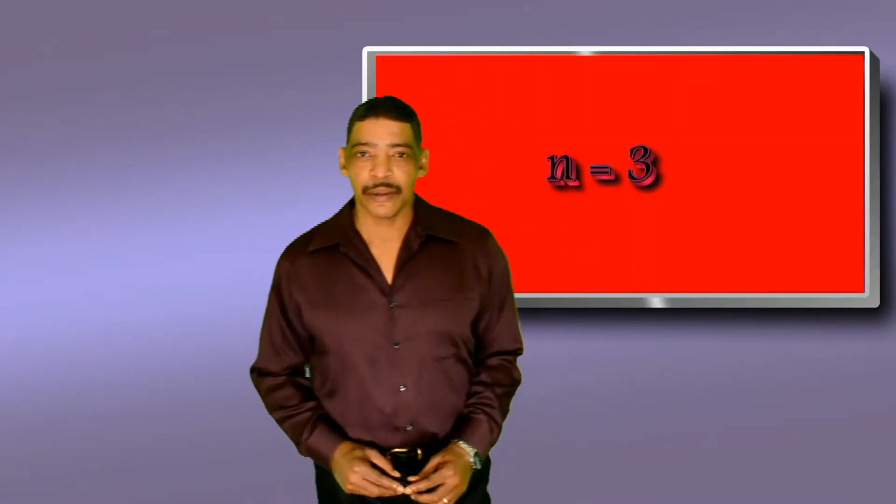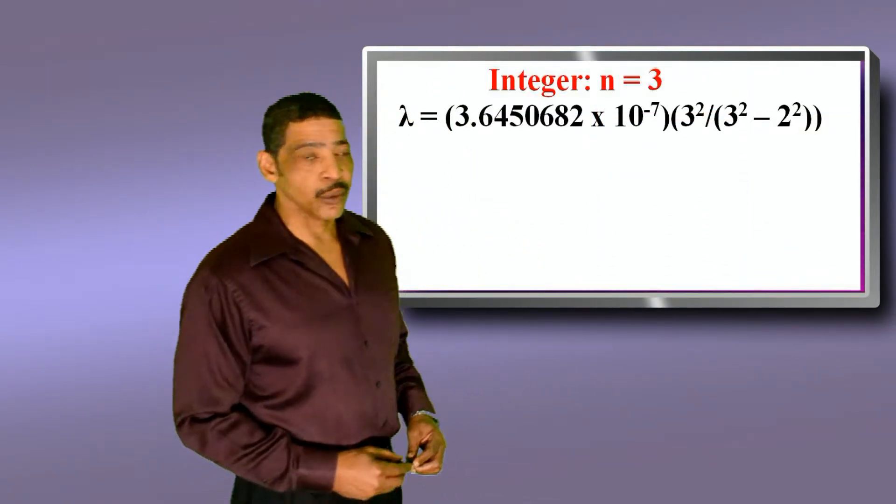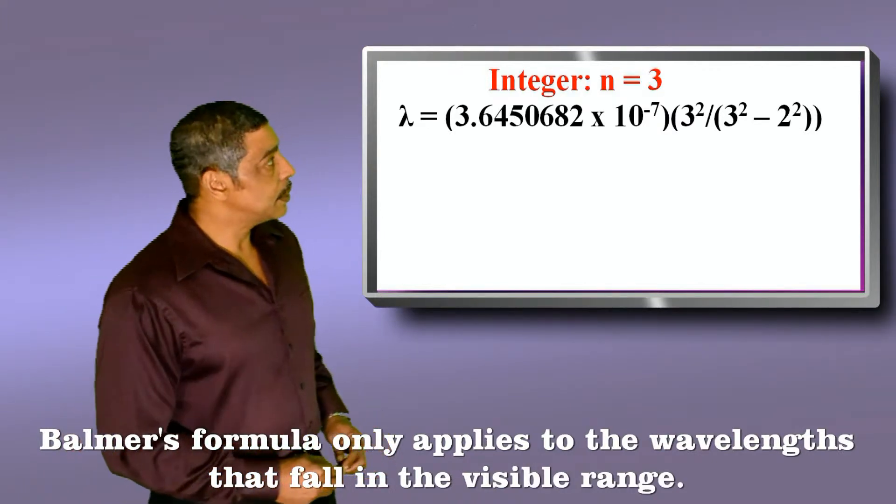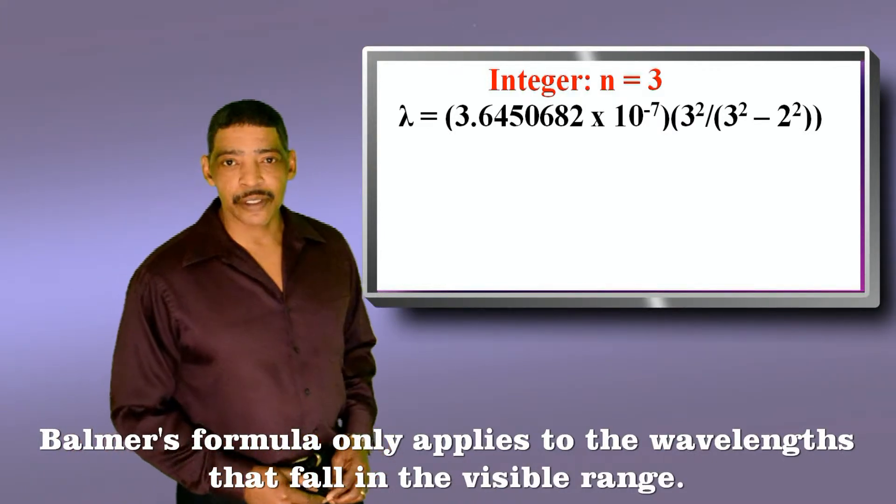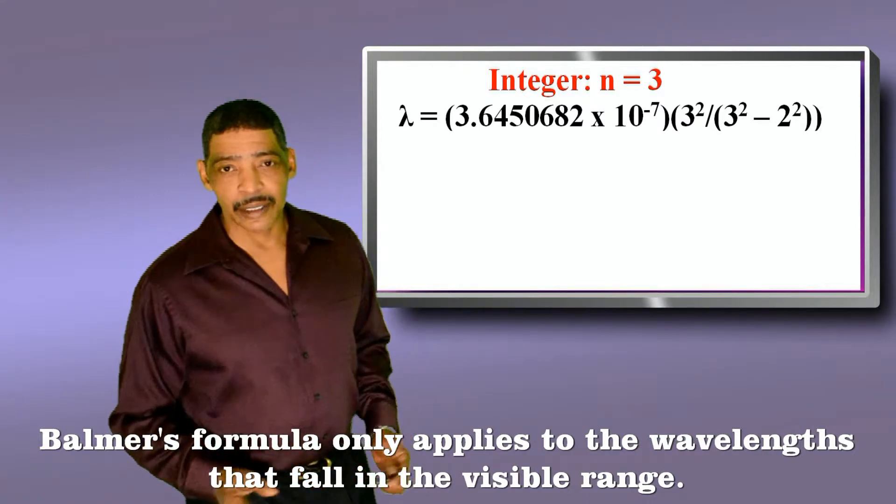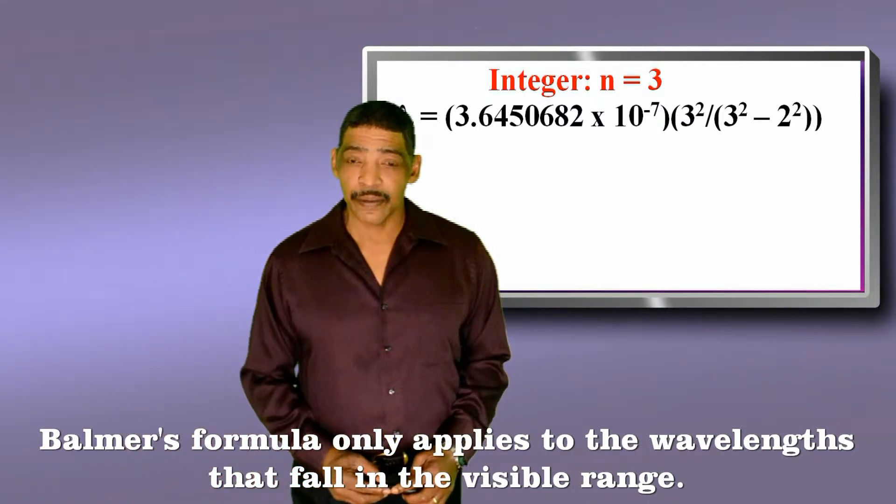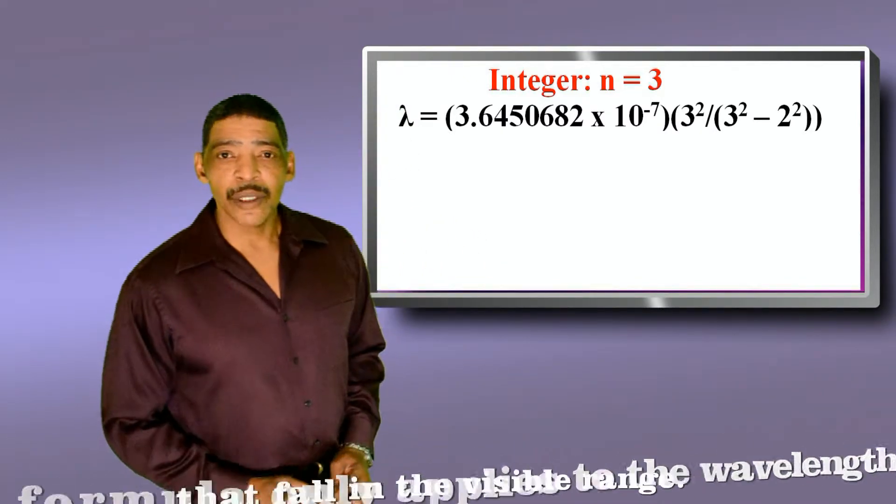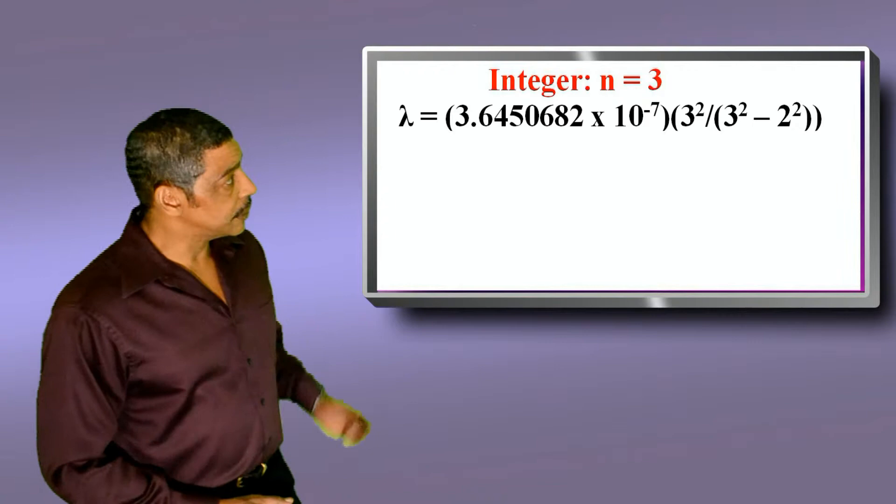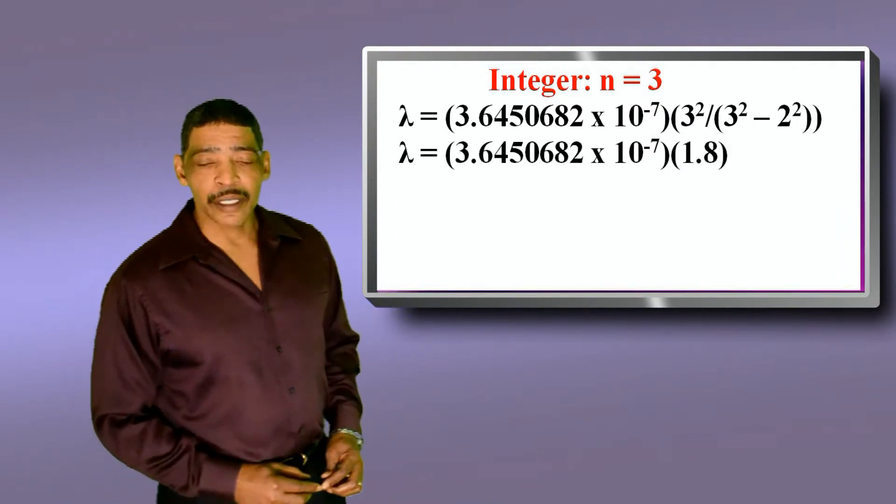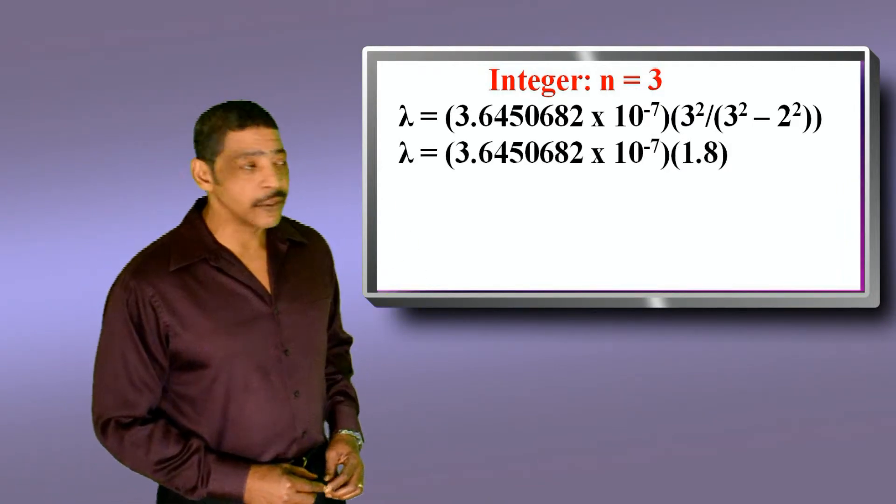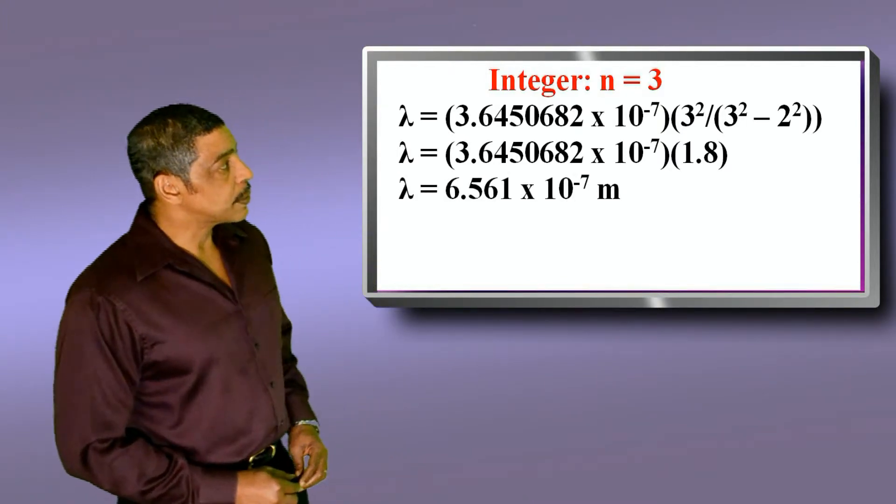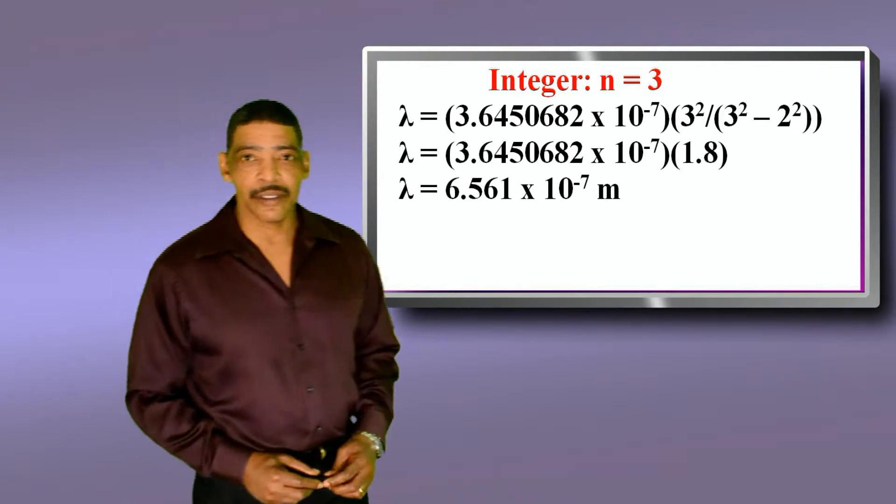Beginning with n is equal to 3, let's identify hydrogen's four spectral lines. If n is equal to 3, then lambda is equal to Balmer's constant, 3.6450682 times 10 to the minus 7 meter times 3-squared divided by 3-squared minus 2-squared. 3-squared divided by 3-squared minus 2-squared is equal to 1.8. Therefore, lambda is equal to Balmer's constant times 1.8, and lambda will equal 6.561 times 10 to the minus 7 meter.